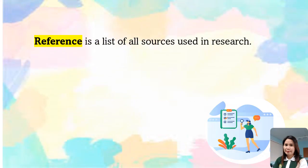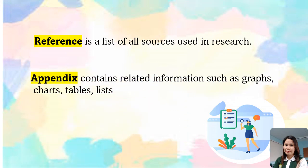Next, we have reference — it is a list of all sources used in research, and it can be described as giving credit with citation. Next, we have appendix, which contains related information such as graphs, charts, tables, and lists. It contains supplementary material that is not an essential part of the text itself, but may be helpful in providing a more comprehensive understanding of the research problem. And those are some technical terms used in research.